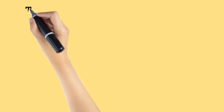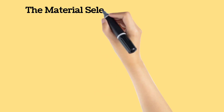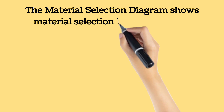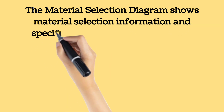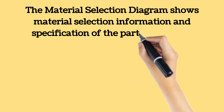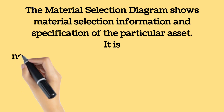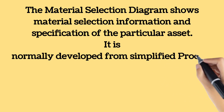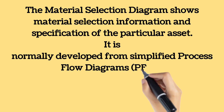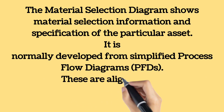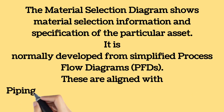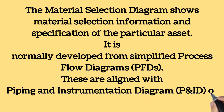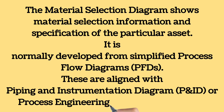The material selection diagram is an engineering drawing which shows material selection information and specification of the piping and equipment in a process unit. The facility MSD is normally developed from simplified process flow diagrams, PFDs, by the process engineer, material engineer, and the metallurgist of the project. The material engineer uses the material selection diagram to assign a line class specification to each line on the piping and instrumentation diagram, P&ID, or Process Engineering Flow Scheme, PEFS.